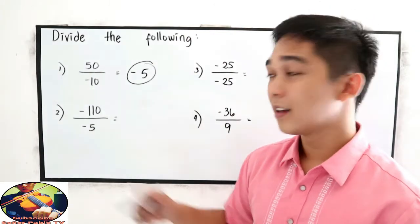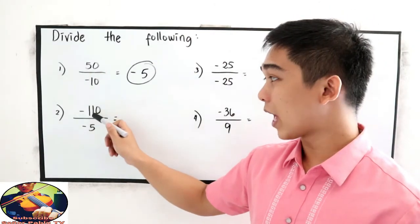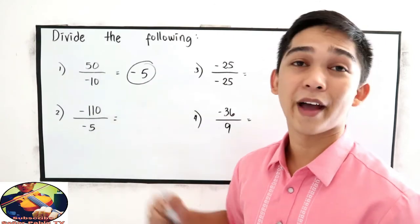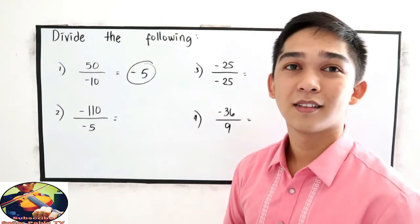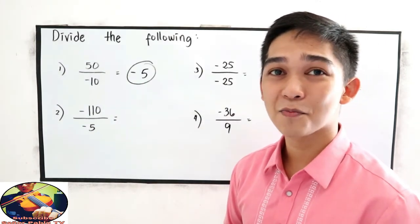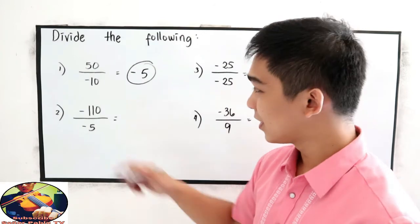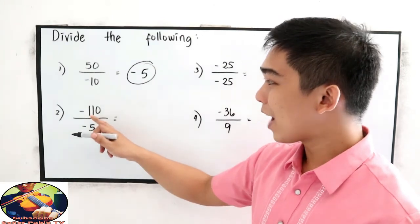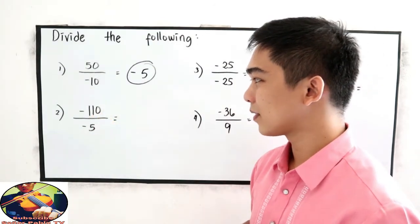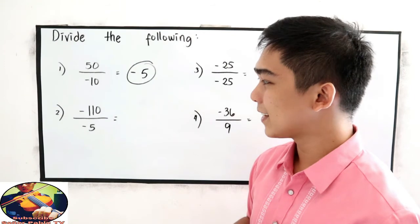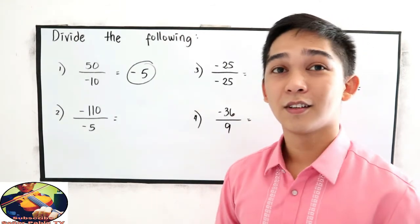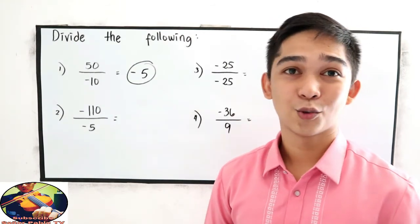Next: negative 110 divided by negative 5. Like signs, so the quotient is positive. 110 divided by 5 is 22, so the answer is positive 22.